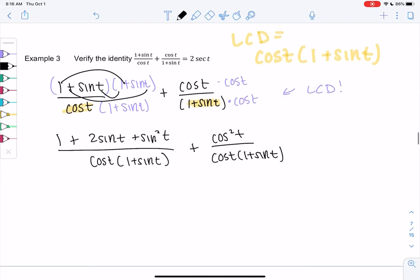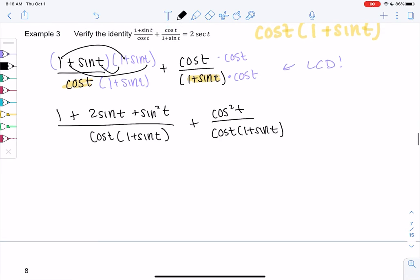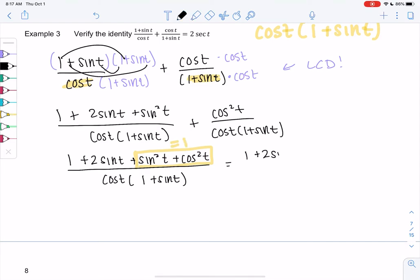Now that we have LCD, let's combine them. Just making one fraction because they have the same denominator now. Let's just look for things. I notice sine squared and cosine squared, and that is equal to one. So that's like our new favorite identity.